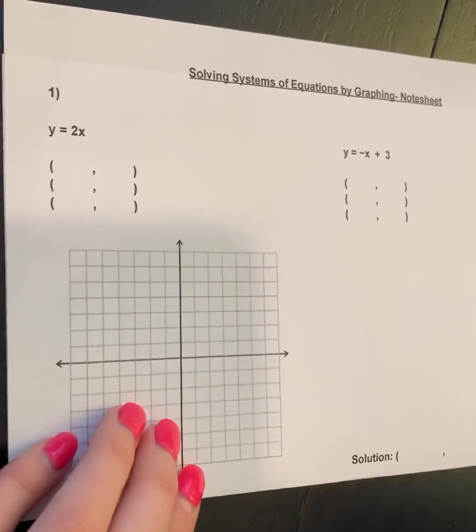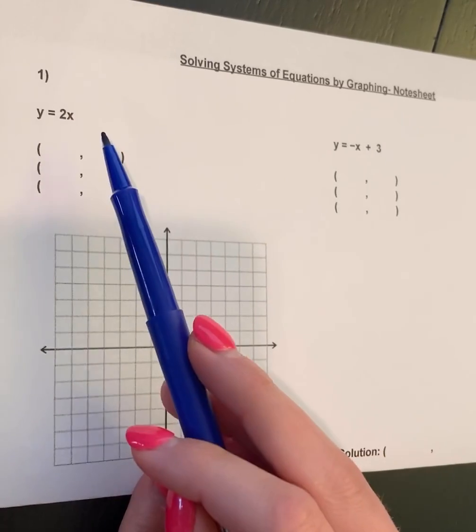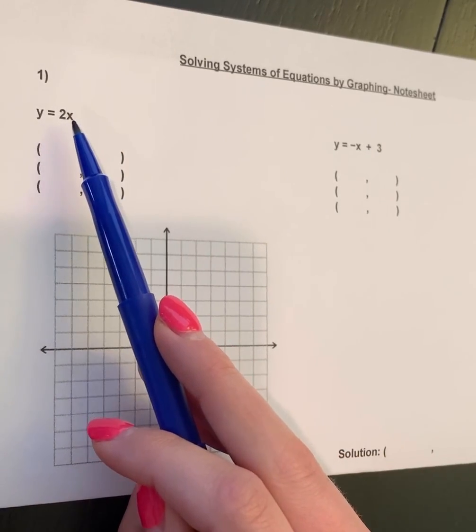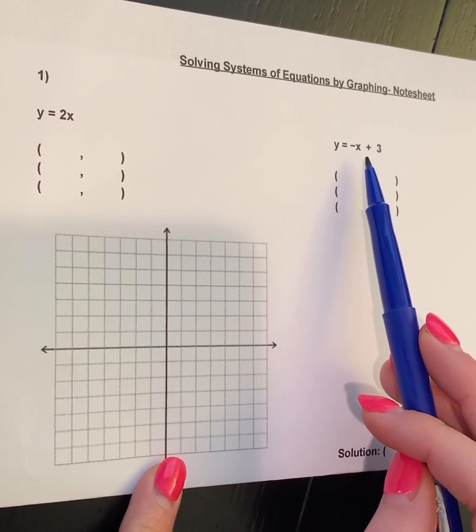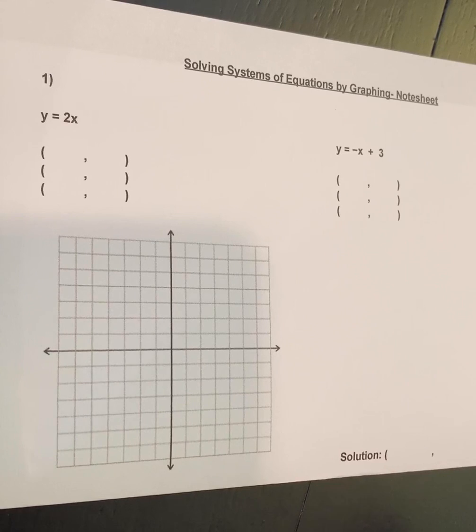So the first example here: notice that I have two equations. The first one is y = 2x, the second one is y = -x + 3. The first thing that you need to do when you are solving a system of equations is to find a couple points to help you graph it.